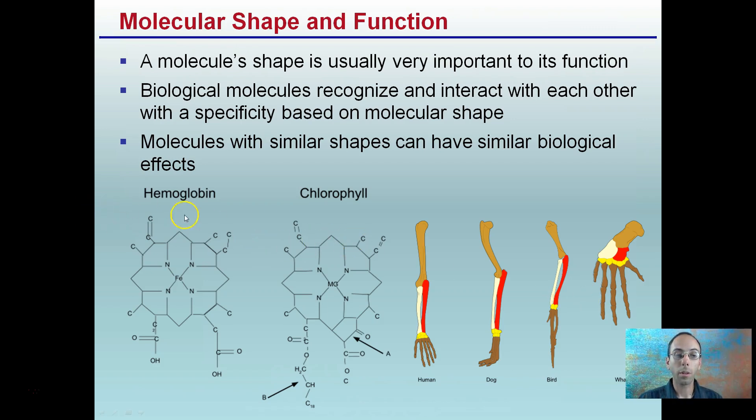Just an example here of hemoglobin and chlorophyll. If you look at them quick, they look very similar. Hemoglobin is in red blood cells, chlorophyll in plants. When we study bones, how they have a lot of similar shape and function here, we see the humans, the dog, the bird, and the whale, how these particular bones may have similar functions for us.